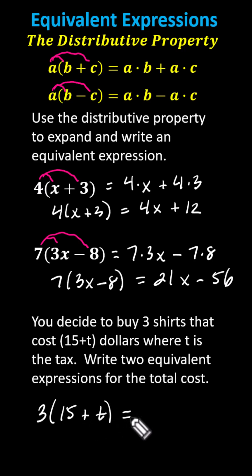And now to write an equivalent expression, we can distribute the three. Distributing the three gives us three times fifteen plus three times T, which indicates the expression three times the quantity fifteen plus T is equivalent to forty-five plus three T.